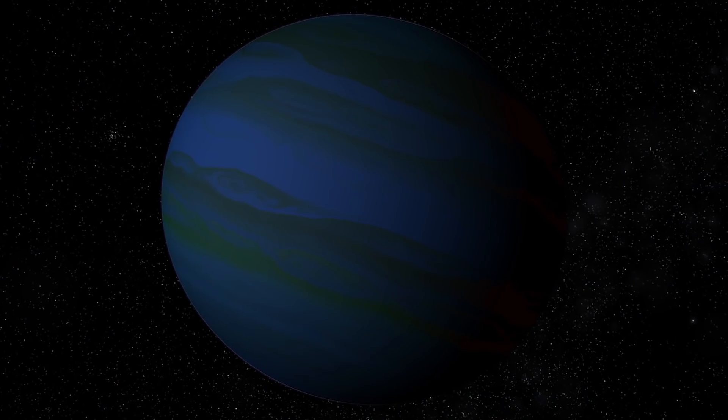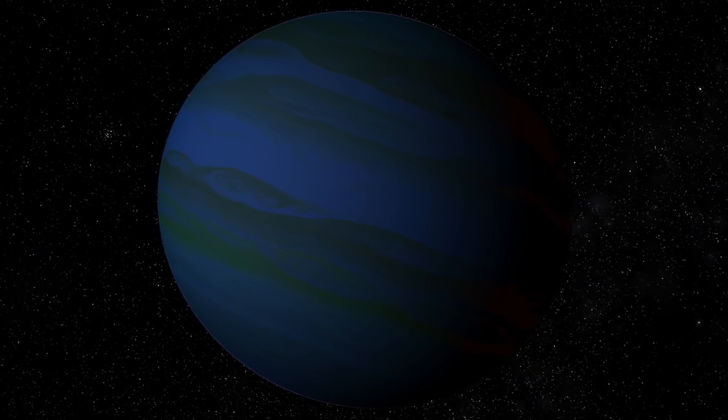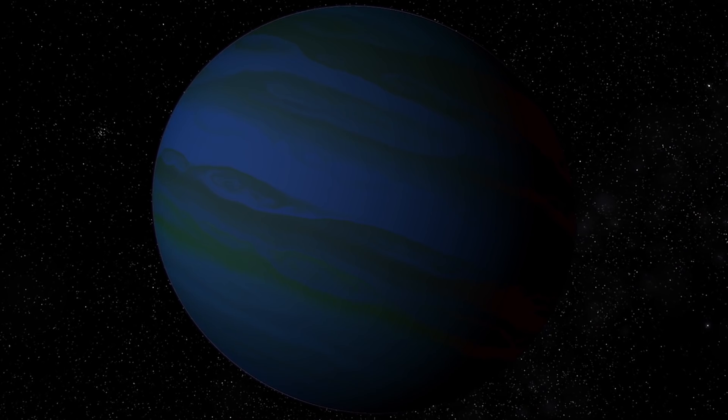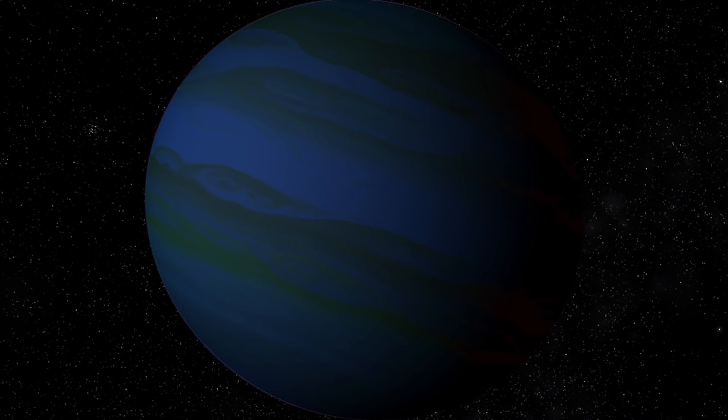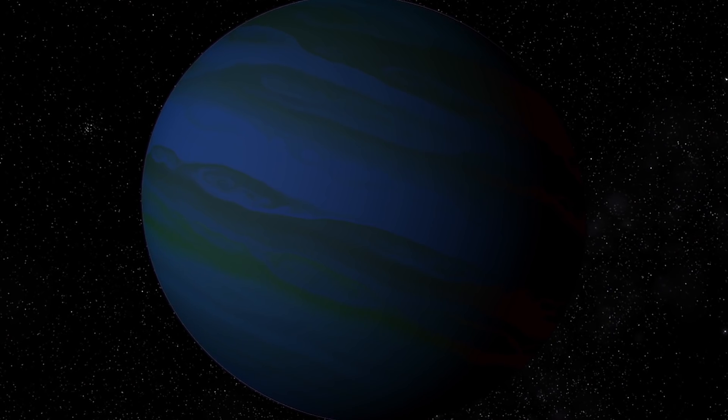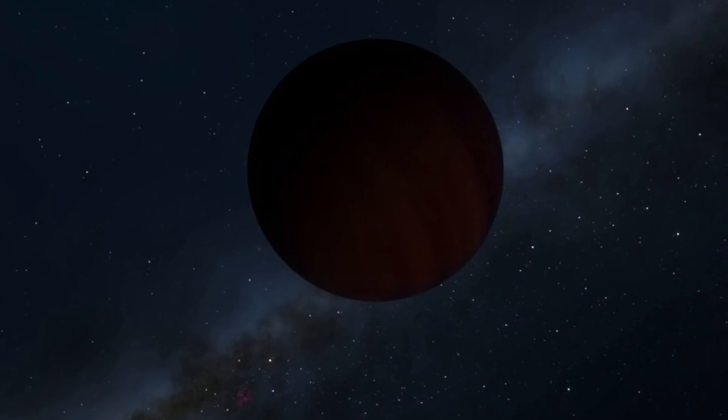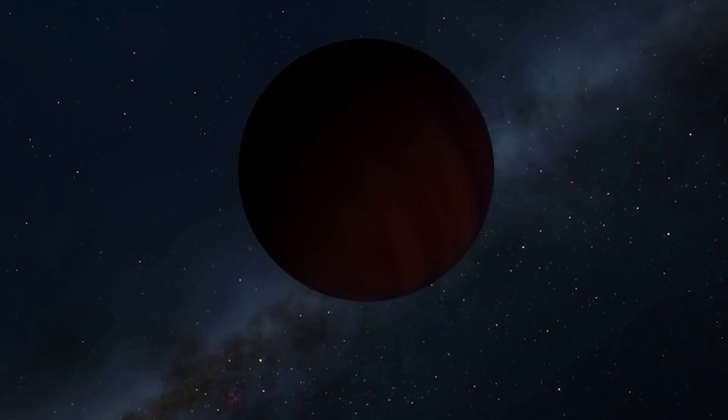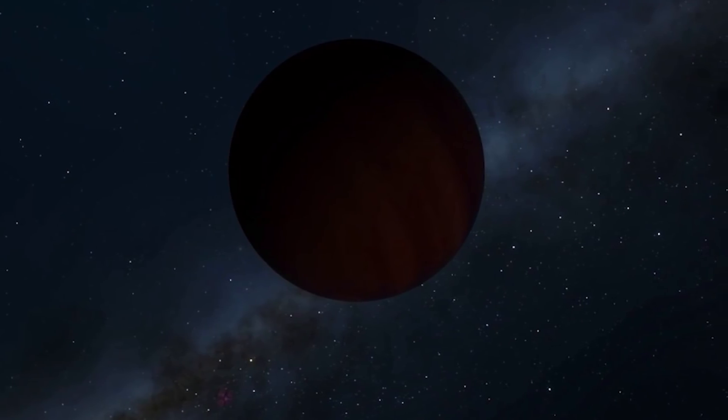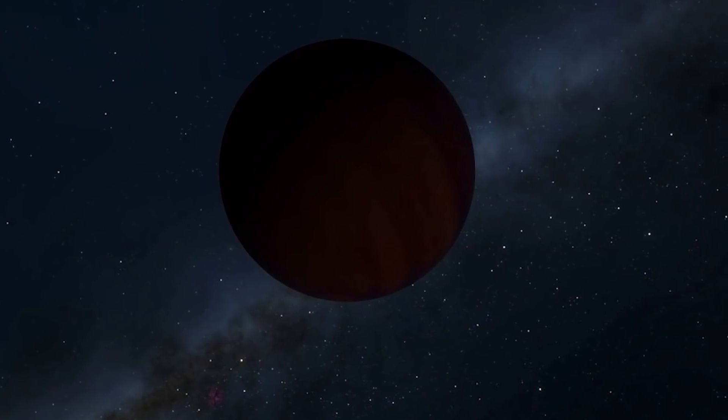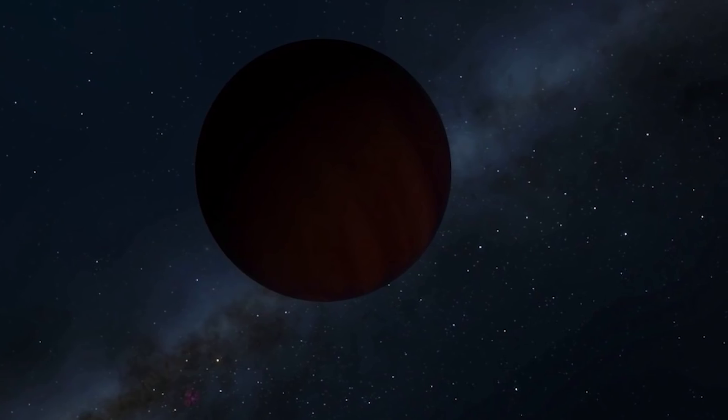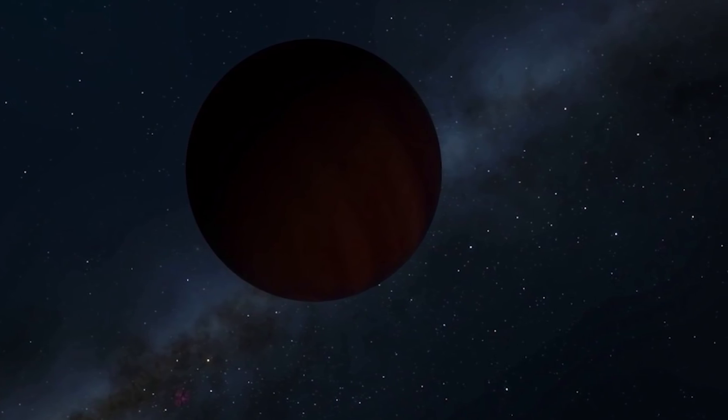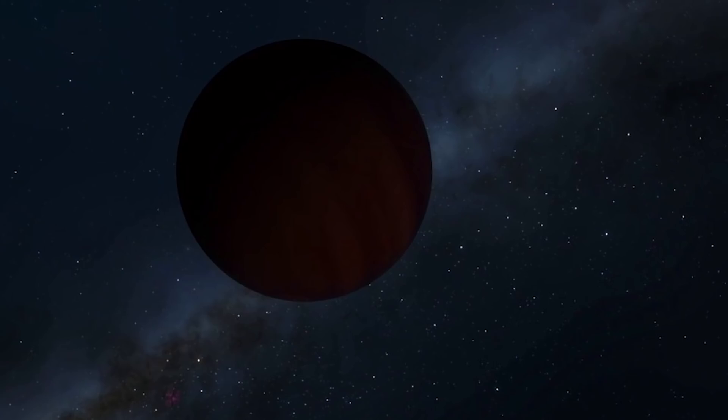There is a planet that is darker than coal. Would you believe that there is a planet that is darker than coal? Well there is. TrES-2b is 750 light years away from our solar system, and there it lies, a gaseous Jupiter-sized world that astronomers have called TrES-2b. Despite its unassuming name, this exoplanet holds the honor of being the darkest known exoplanet out there, reflecting less than 1% of the light that hits it.